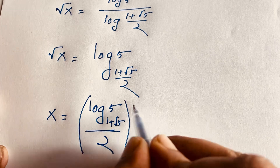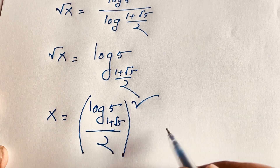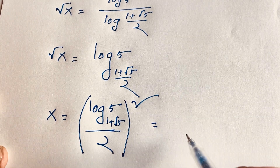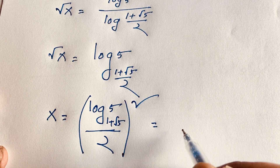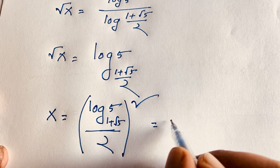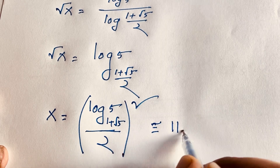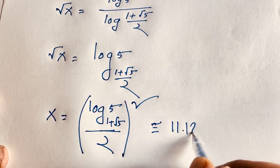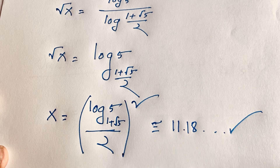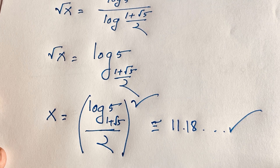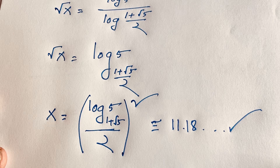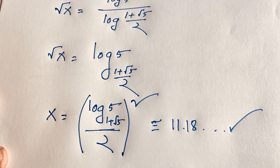This is our final answer for this math Olympiad question. Using a calculator, it is approximately 111.18. This is our final answer. Thank you all — if you enjoyed this video, please subscribe to my channel for other interesting videos. Goodbye, take care.